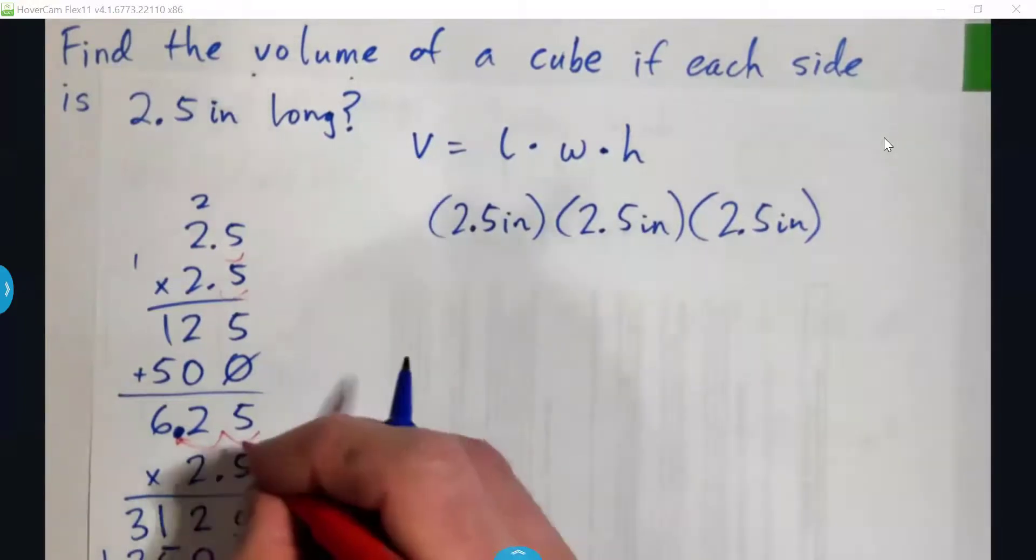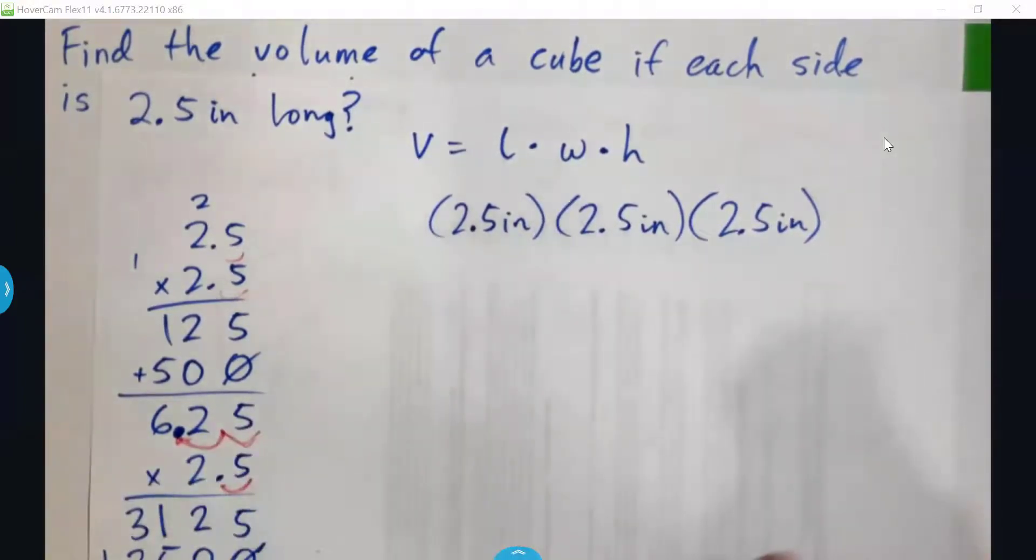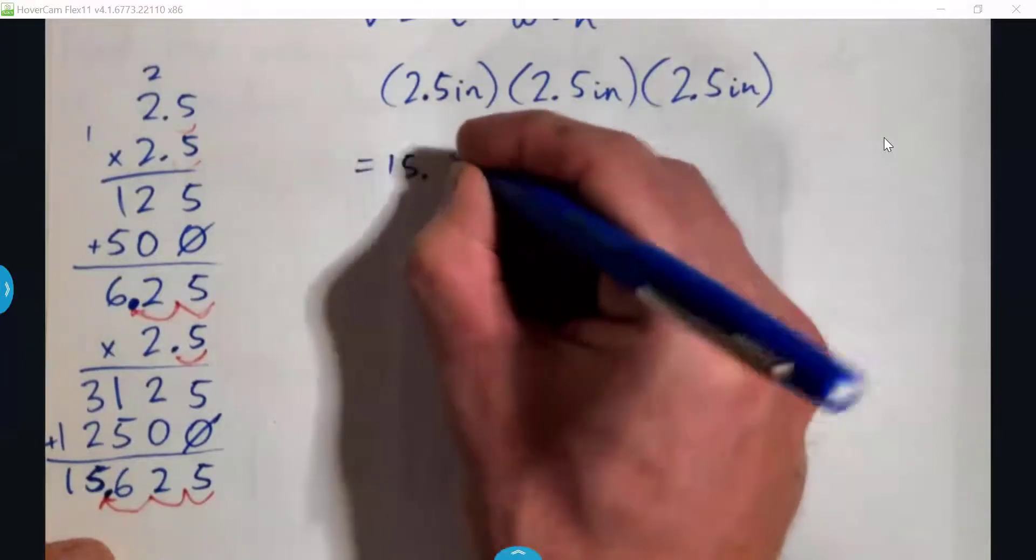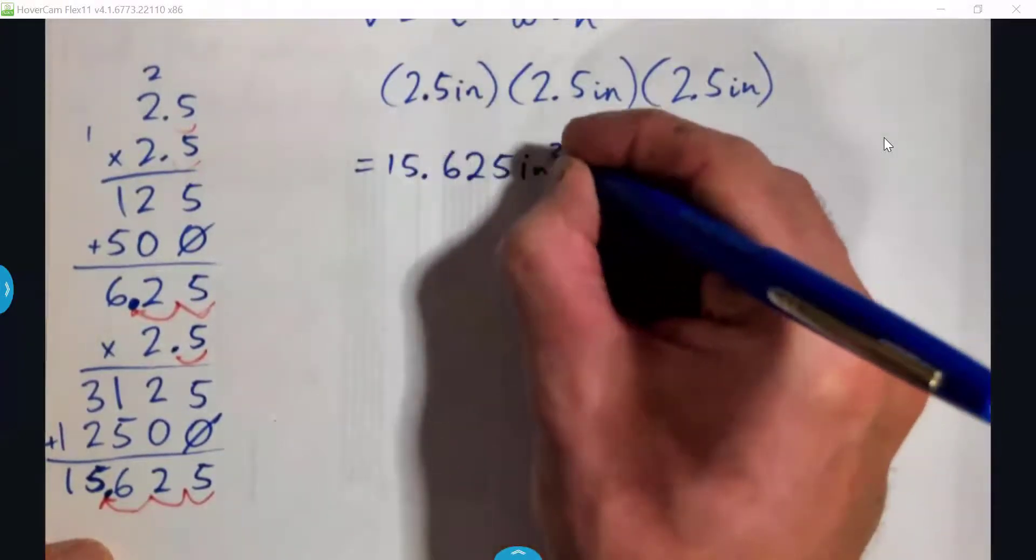and there are, this time, 1, 2, 3 decimal places in the question, so there should be 1, 2, 3 in the answer, so 15.625, right? All right, so that should be 15.625 cubic inches.